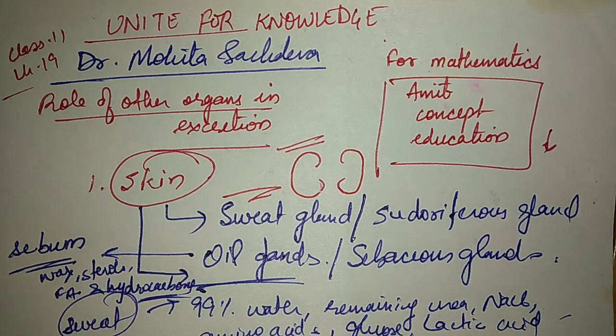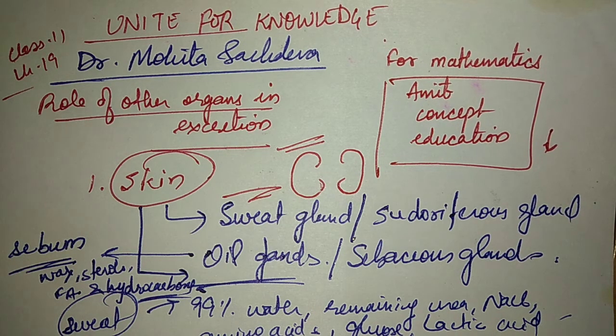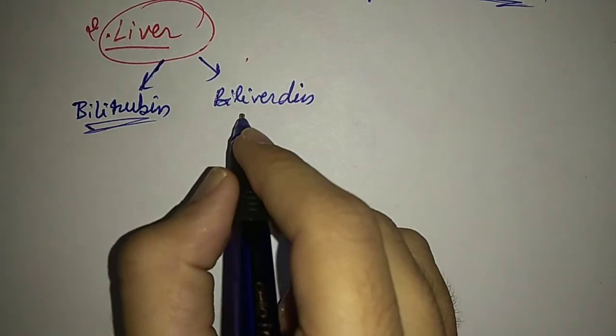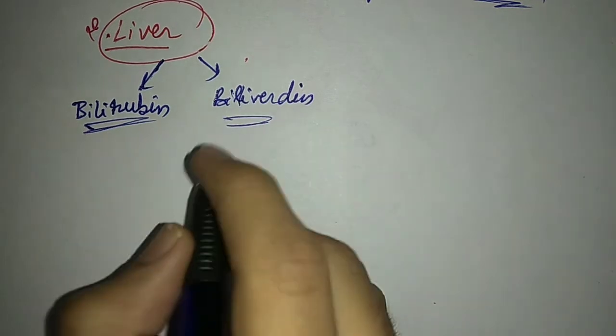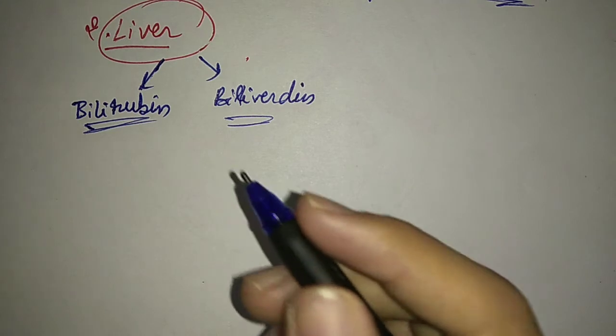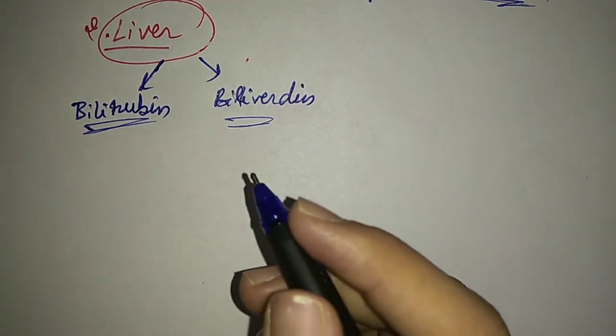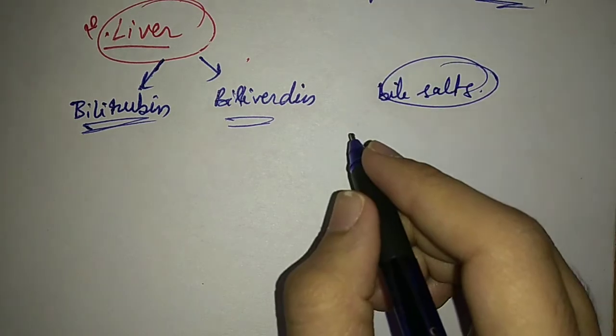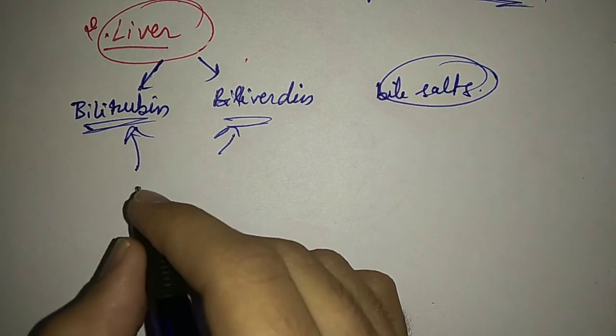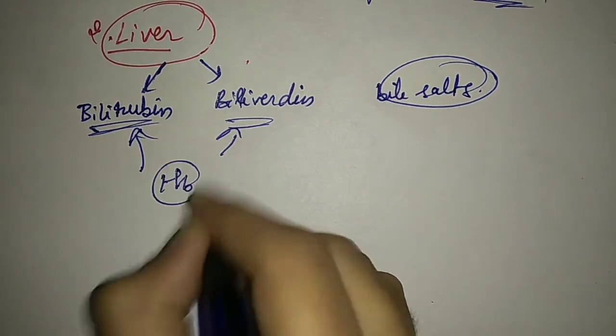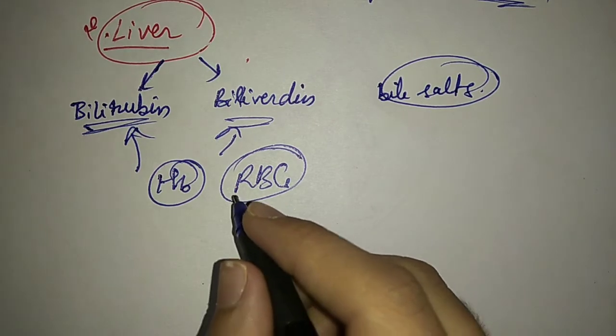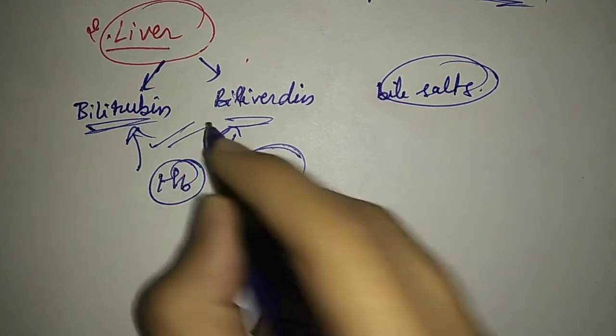The other organ helping in excretion is the liver. The liver produces two types of pigments which are bilirubin and biliverdin. These are the bile pigments secreted in bile by the liver. Both these pigments are formed by the disintegration of the hemoglobin present in RBCs. When RBCs die, their hemoglobin breaks down and these two pigments form: bilirubin and biliverdin.